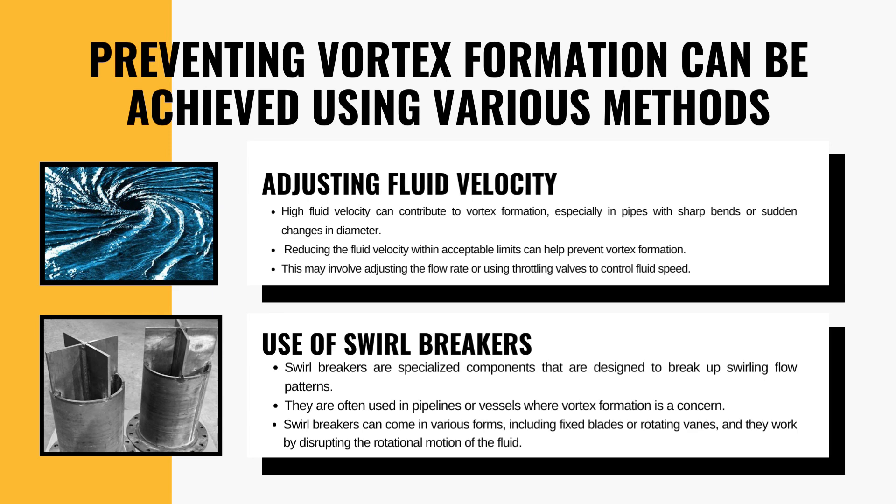Next comes the use of swirl breakers. Swirl breakers are specialized components designed to break up swirling flow patterns. They are like the blender blades for the fluid — they break up swirling patterns and restore order in pipelines and vessels. Swirl breakers can come in various forms, including fixed blades or rotating vanes, and they work by disrupting the rotational motion of the fluid.